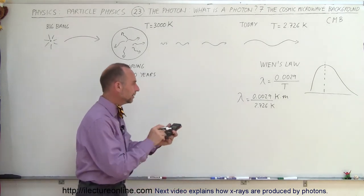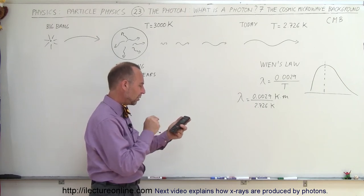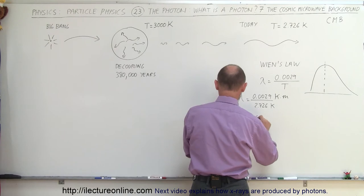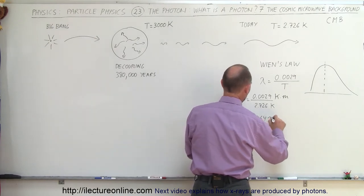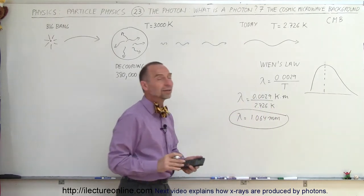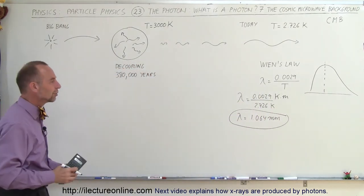So with a calculator, 0.0029 divided by 2.726 equals, so the wavelength is equal to 1.064 millimeters. That's the current wavelength of the CMB, the cosmic microwave background radiation that now permeates through the entire universe.